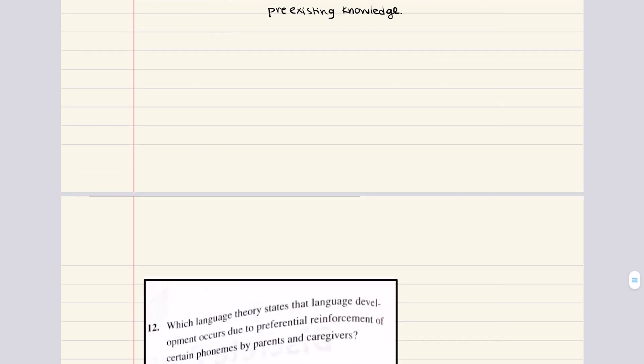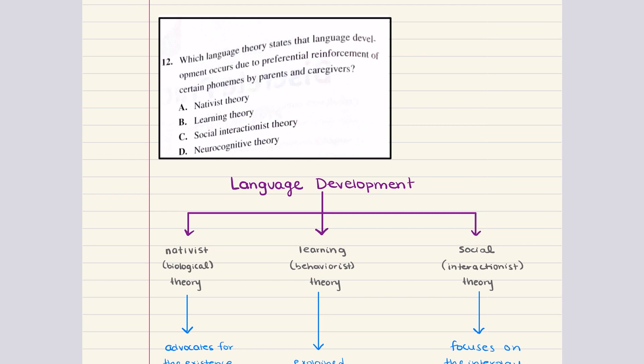Problem 12 says which language theory states that language development occurs due to preferential reinforcement of certain sounds by parents and caregivers? We talked about three theories: biological theory, learning theory, and social theory. The theory that aligns with what this question is asking is learning theory. This was based on the work of B.F. Skinner, and he states that parents reinforce sounds that sound like their language, resulting in preferential preservation of those sounds. The correct answer for 12 is B.